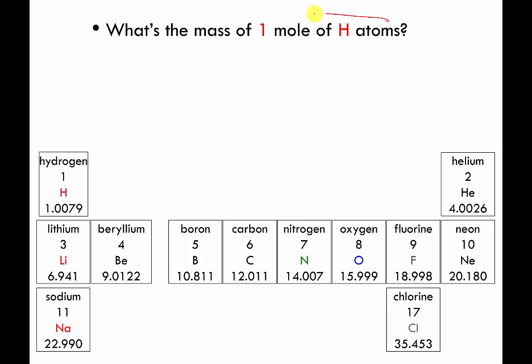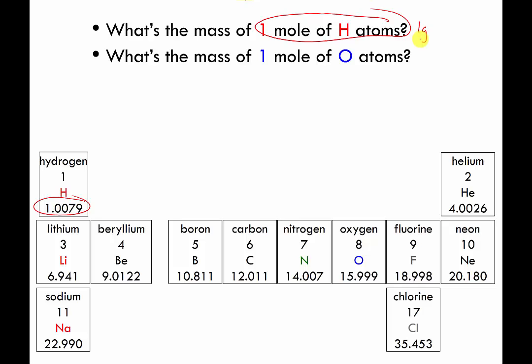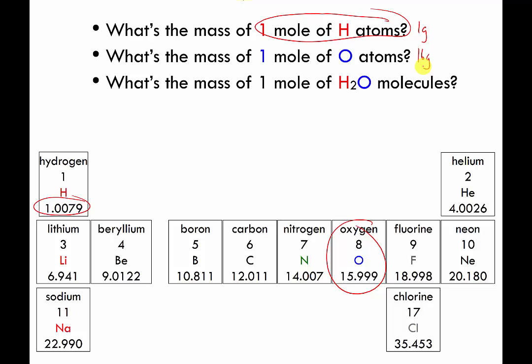So the molar mass of one mole of hydrogen is about one gram — let's just round to the nearest whole number. What's the molar mass of one mole of oxygen atoms? And what's the molar mass of one mole of water molecules?